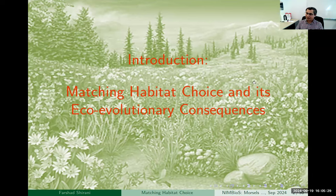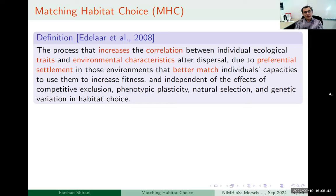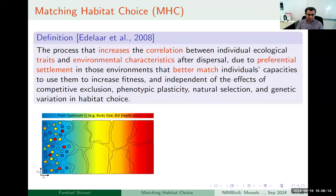Matching habitat choice — this is the formal definition, which in short means that this is an adaptive dispersal strategy in which species individuals try to assess the environment and then move to the location which best matches their phenotype. This phenotype matching can give them better performance, and if the phenotype is fitness-related, it can also give individuals better fitness, which can result in adaptation.